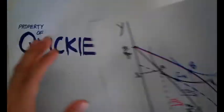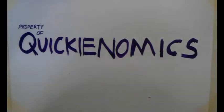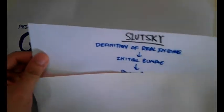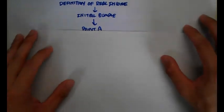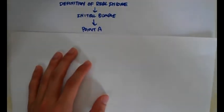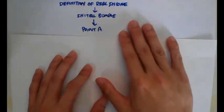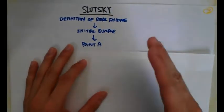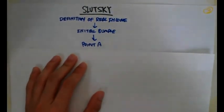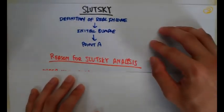With that done, let's move on to our dear friend Slutsky. For Slutsky, it is a little bit more confusing. His definition of real income is in terms of the initial bundle. When we hear the words 'initial bundle,' we think about point A — that is the chain of thought.